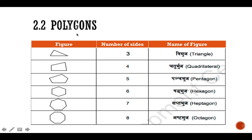Now we come to polygons. A polygon has at least three sides. If the number of sides is three, we call it a triangle. Four sides makes a quadrilateral, five is a pentagon, six is a hexagon, seven is a heptagon, eight is an octagon, and so on.